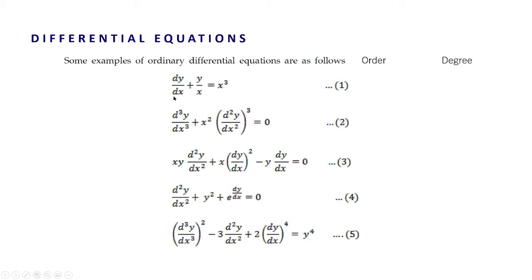For the first example, the highest order derivative is 1, that is dy by dx — y is differentiated once with respect to x. So the order is 1, and dy by dx is raised to the power 1, so the degree is also 1. For the next example, y is differentiated 3 times with respect to x, giving d³y/dx³ as the highest order derivative. So the order is 3, and this highest order derivative is raised to the power 1, so the degree is 1. For the third example, the highest order derivative is d²y/dx², so the order is 2 and the degree is 1.